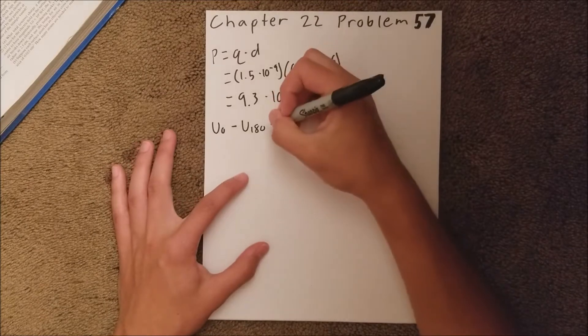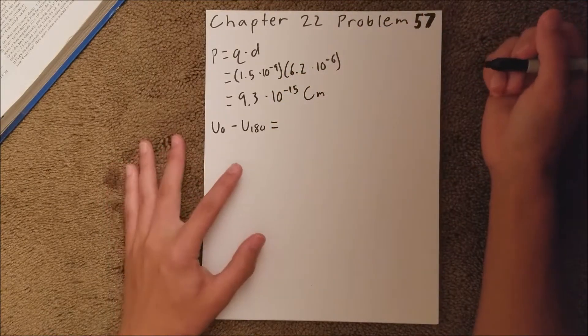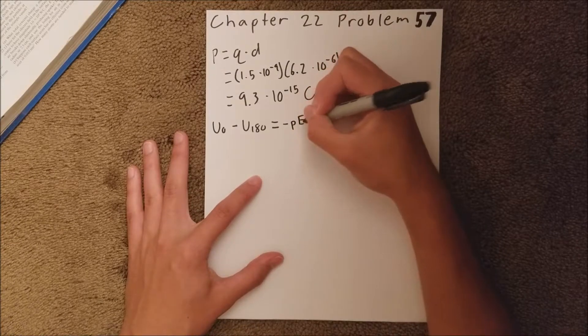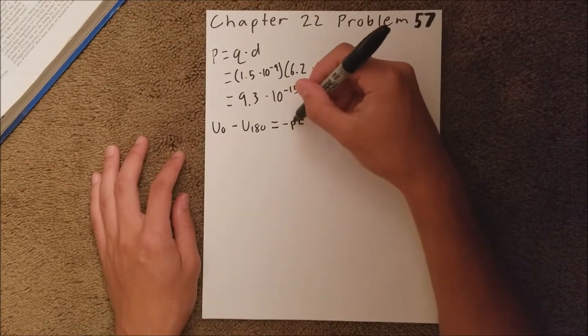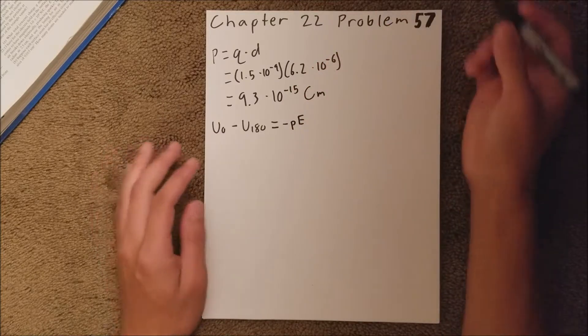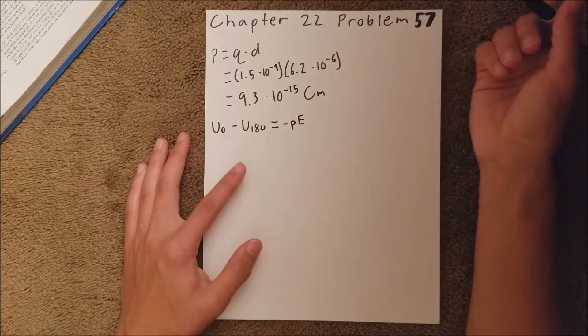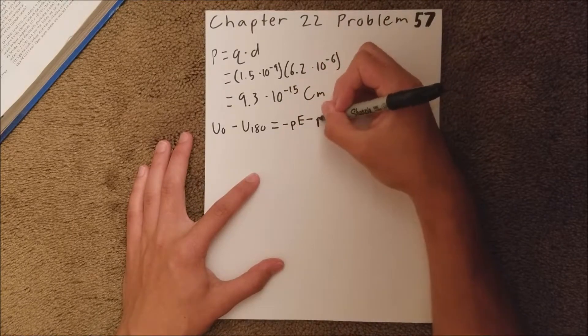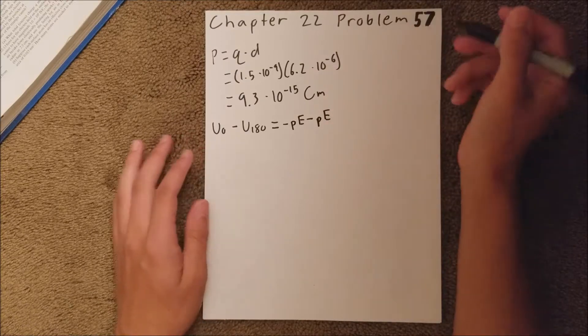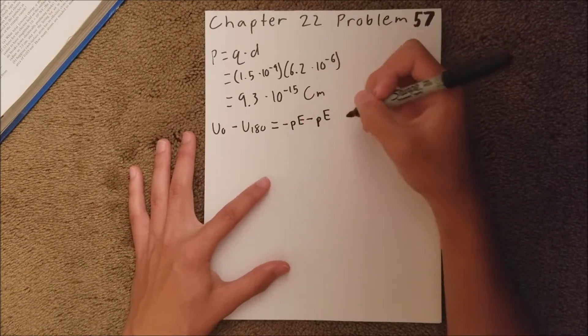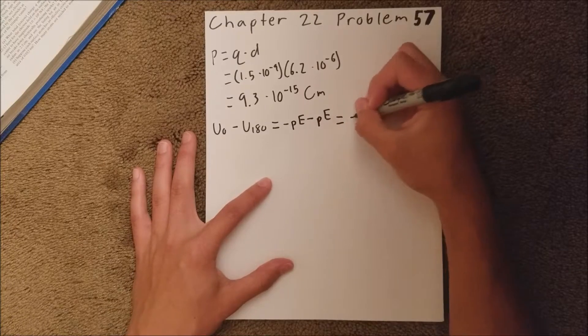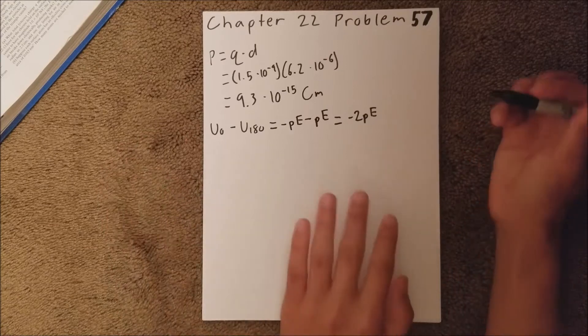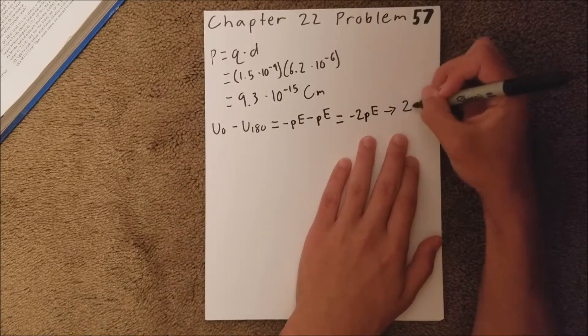The potential energy parallel to the electric field is the weakest, so it's negative dipole moment times the field. And then when it's anti-parallel, it is at its maximum, so that's going to be minus and then another P.E. And so, if we subtract those, we get negative 2 P.E. And it asks for the magnitude, so we can actually just say 2 P.E.